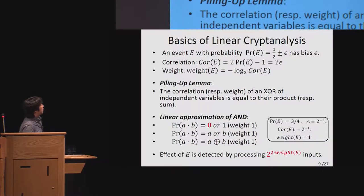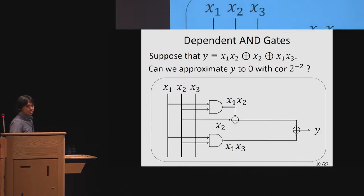We have the piling up lemma, which is quite convenient to calculate the correlation of XOR of several independent events. The correlation of XOR of two independent events is just like a multiplication of the correlation of each event, which is quite easy. The piling up lemma is very convenient, but in many cases, inputs are dependent.